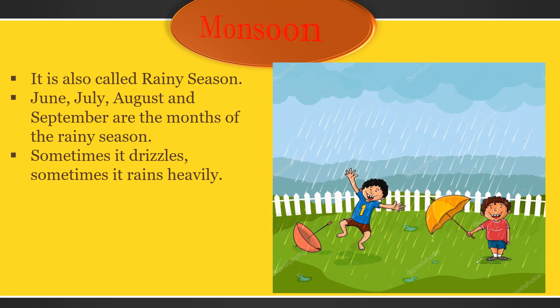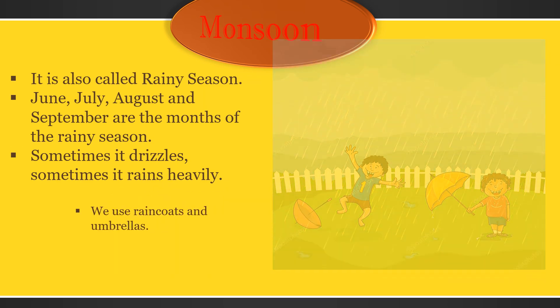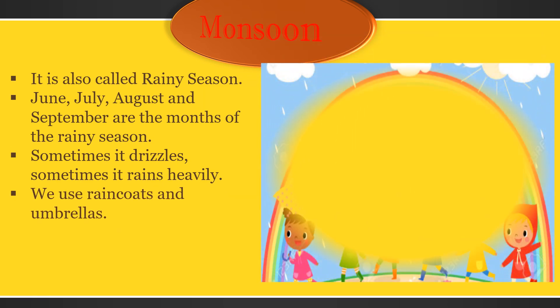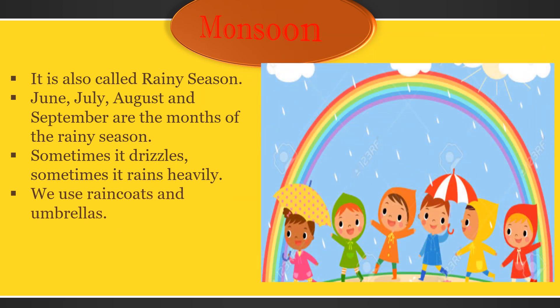Sometimes it drizzles, sometimes it rains heavily. Drizzle means slow rain. We use rain coats and umbrellas to protect ourselves from the rain. We also wear gum boots to protect ourselves from the rain.